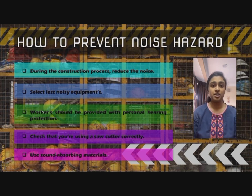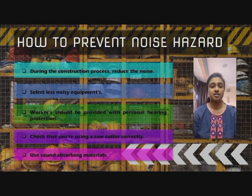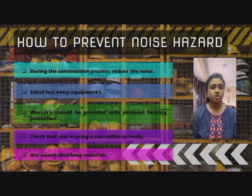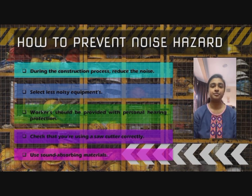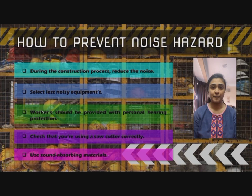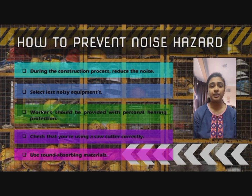The fourth point is to check that you are using a saw cutter correctly. The metal saw is frequently one of the noisier pieces of equipment on a construction site. Choose a blade with the most teeth and a small gap between teeth, as well as the smallest possible gullet throat, to reduce noise generated by a metal saw. You should also make it a habit to verify that the blade's condition is suitable and change the blade when it starts to show symptoms of wear. The fifth point is to use sound absorbing materials. Construction noise can be reduced by using sound absorbing materials. Sound waves bounce off metals, woods, and stone, which are all sound-reflective materials. Instead, use sound absorbing materials like carpet, foam cushion, or fibreglass insulation.